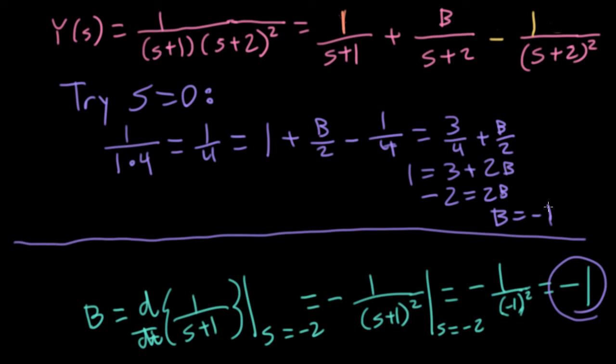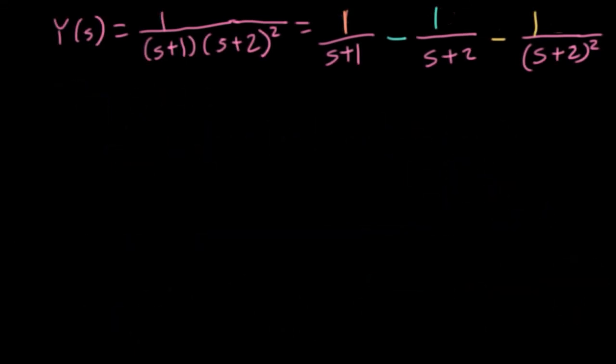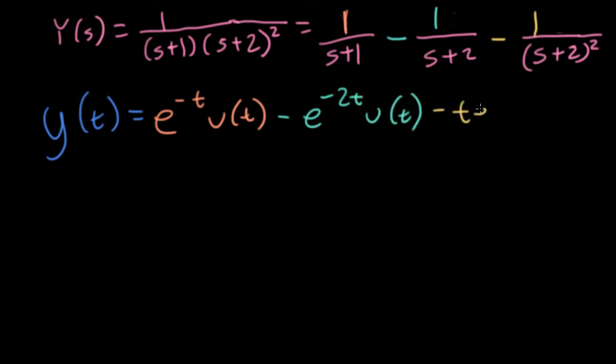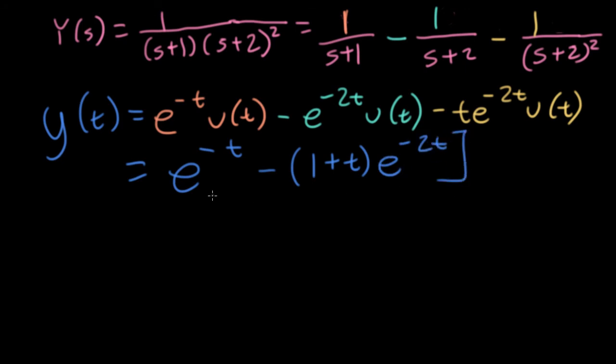Either way, let's replace the B here with minus one. And now I can invert the Laplace transforms. So let's write y of t is equal to e to the minus t u(t) minus e to the minus 2t u(t) minus t e to the minus 2t u(t). And later I'll put in my usual for t greater than or equal to zero caveat. Let's see if we can come up with a more clever way of writing this. I could write this as e to the minus t minus (1 plus t) e to the minus 2t. And this whole thing could be multiplied by u(t).